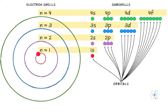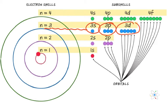The 3s subshell has one orbital containing two electrons. The 3p subshell has three orbitals containing six total electrons. The 3d subshell has five orbitals containing ten total electrons. So the n=3 shell contains a total of 18 electrons in nine orbitals across three subshells. Each subshell has different orbitals, and those orbitals each hold two electrons.